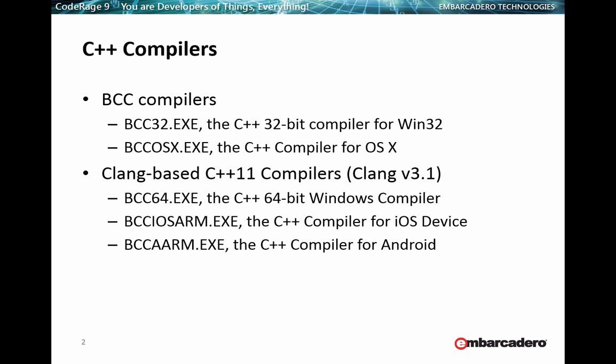On the Clang side — the C++11 compilers — we delivered the 64-bit Windows compiler last year, and throughout the year we've delivered the ARM compilers for iOS and Android. We also have another product called App Method where we make the Android C++ compiler free to use for phone apps going into the Android App Store. If you buy RAD Studio or C++ Builder, you get access to all platforms.